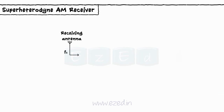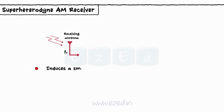Receiving antenna: The AM signal is transmitted in the form of electromagnetic waves. When received, it induces a small voltage in the receiving antenna.